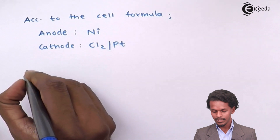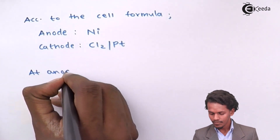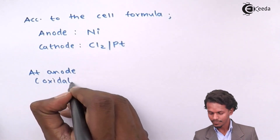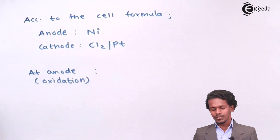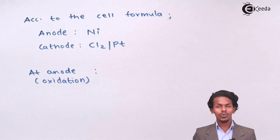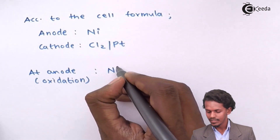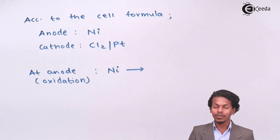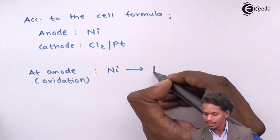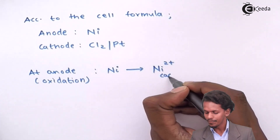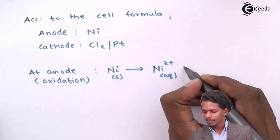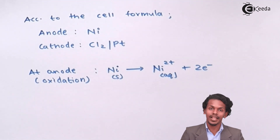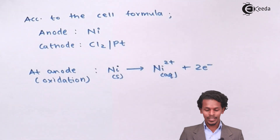At the anode, oxidation always occurs. The nickel electrode gets oxidized, losing two electrons to form Ni²⁺. So the half-reaction is: Ni(s) → Ni²⁺(aq) + 2e⁻. This is the half-reaction for the species undergoing oxidation.